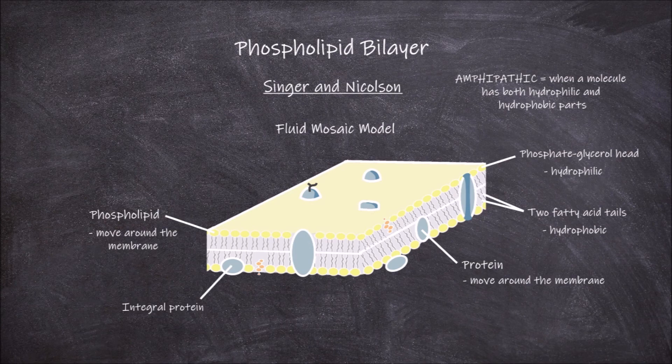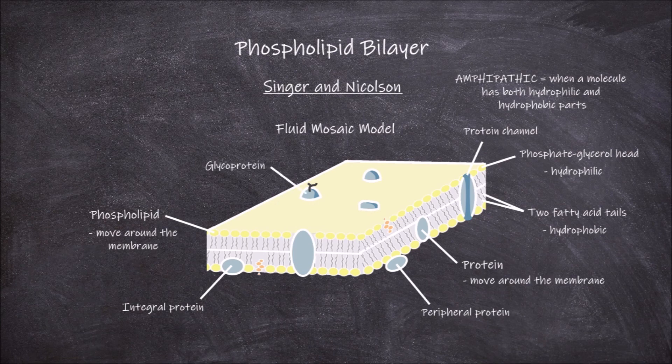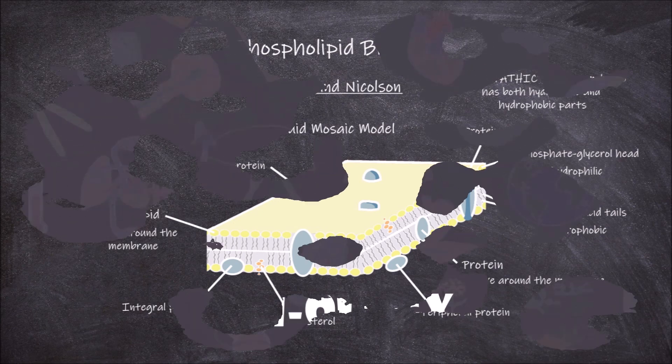Within the phospholipid membrane there are different kinds of proteins. There are integral proteins that are embedded within the membrane, and peripheral proteins that are found at the surface. Some proteins found in the membrane are protein channels, which have a pore running through them. Some embedded proteins are glycoproteins that have a protruding branching antenna-like carbohydrate. Cholesterol molecules are also found between the tails of the phospholipids within the inner hydrophobic region of the membrane.